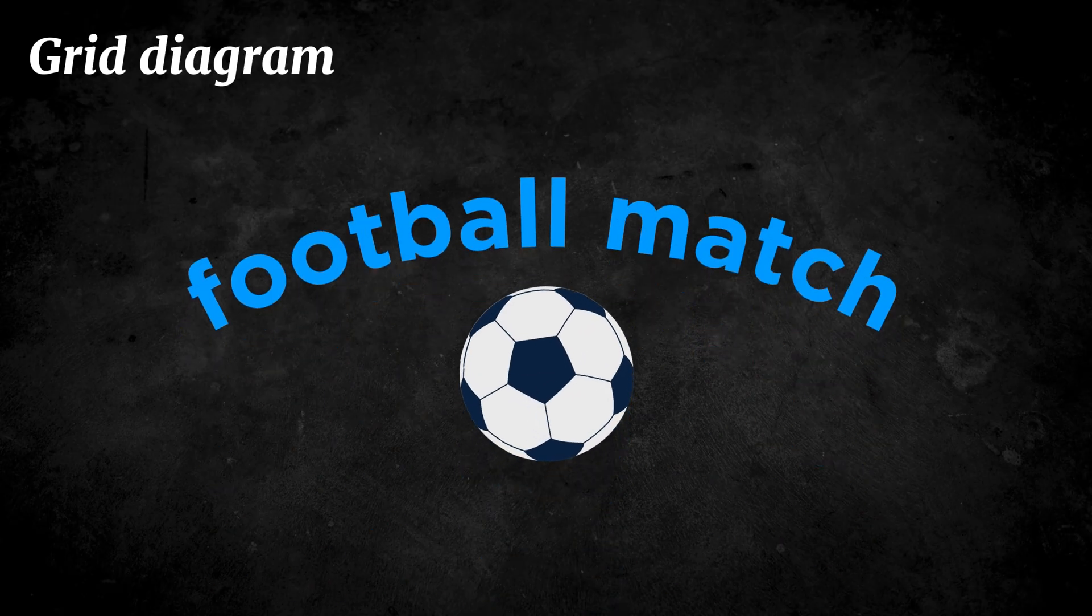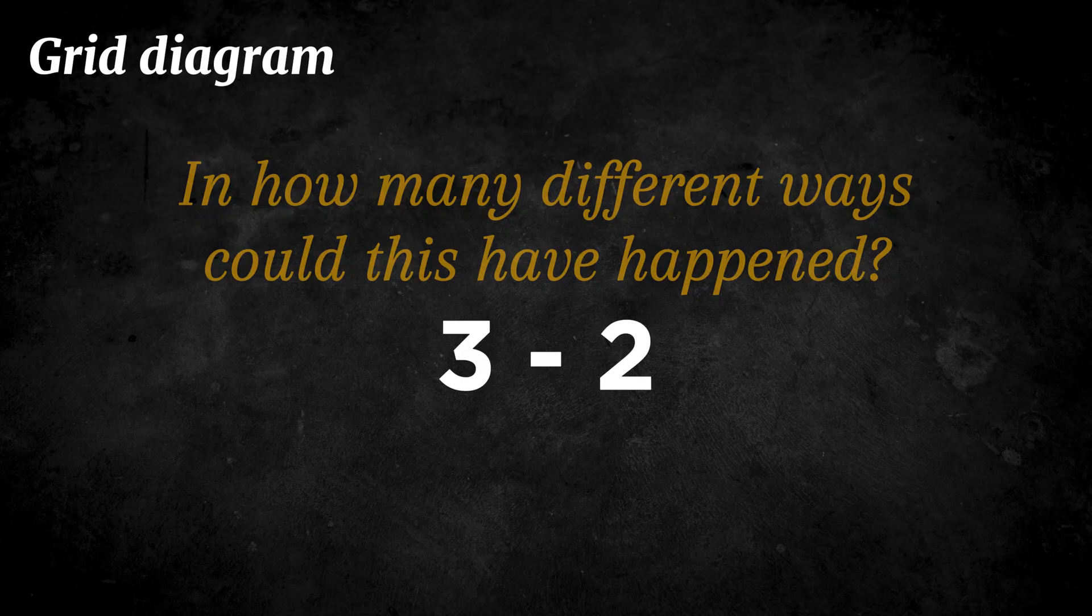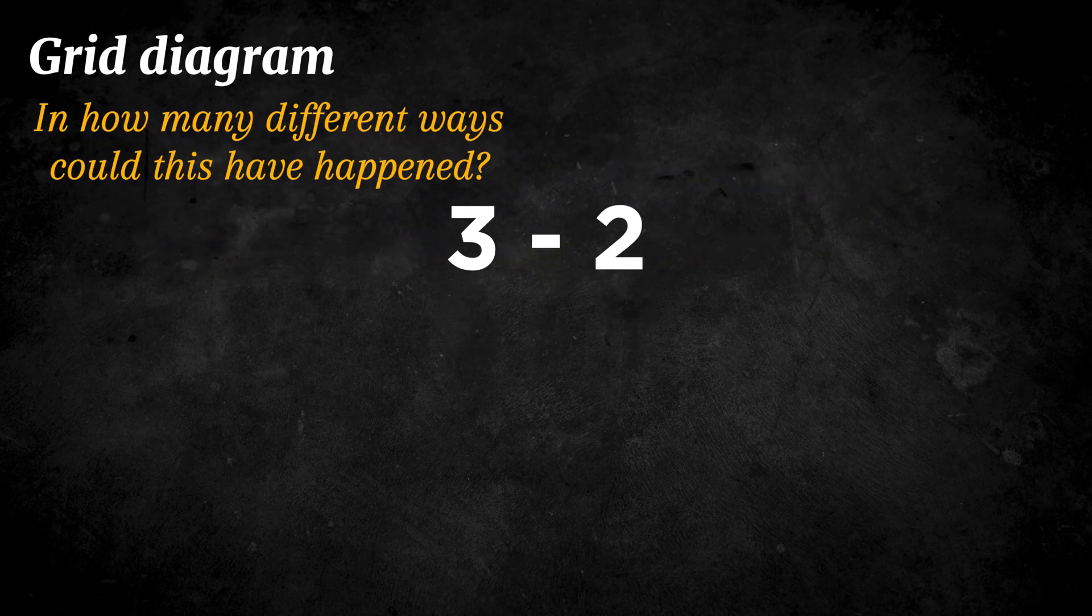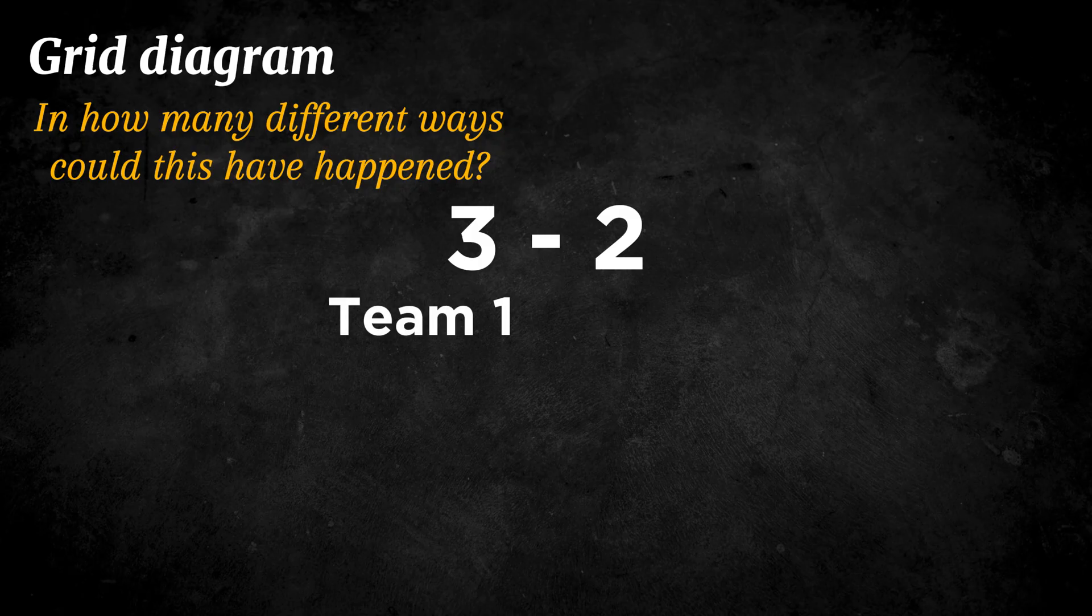Suppose a football match ended with a score of 3-2. In how many different ways could that result have happened? We will call the first team Team 1 and the second team Team 2.